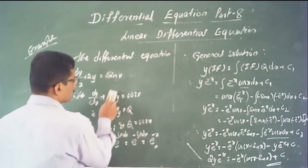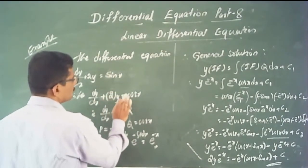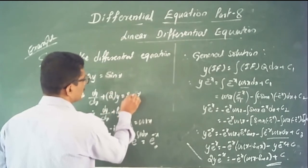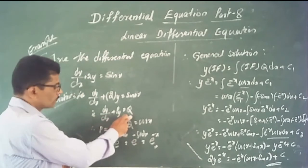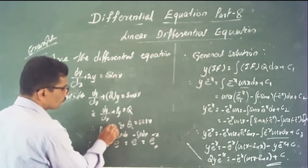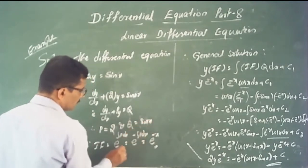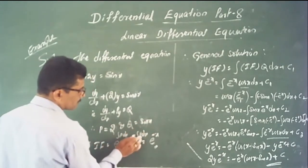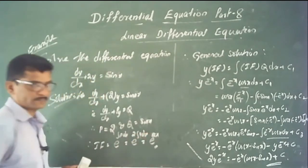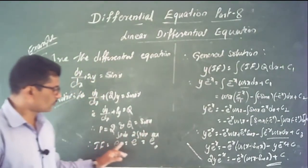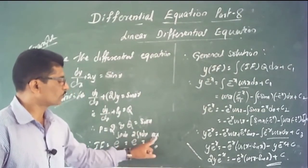Find the general solution of dy/dx + 2y = sin x. The given differential equation is in the form dy/dx + P·y = Q. Here P = 2 and Q = sin x. The integrating factor is e^(∫2 dx) = e^(2x).